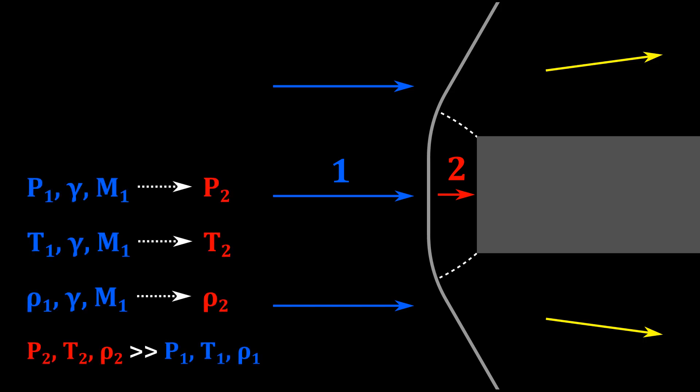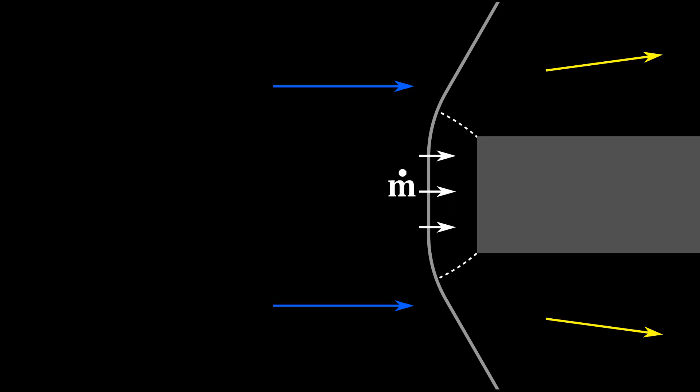Now remember, the post-shock properties only depend on the pre-shock, free stream properties and the Mach number. The next thing to consider is that there will be a certain mass flow rate entering the stagnation region across the normal shock. This flow into the stagnation region must also exit somehow, and it does so by flowing through these gaps here.